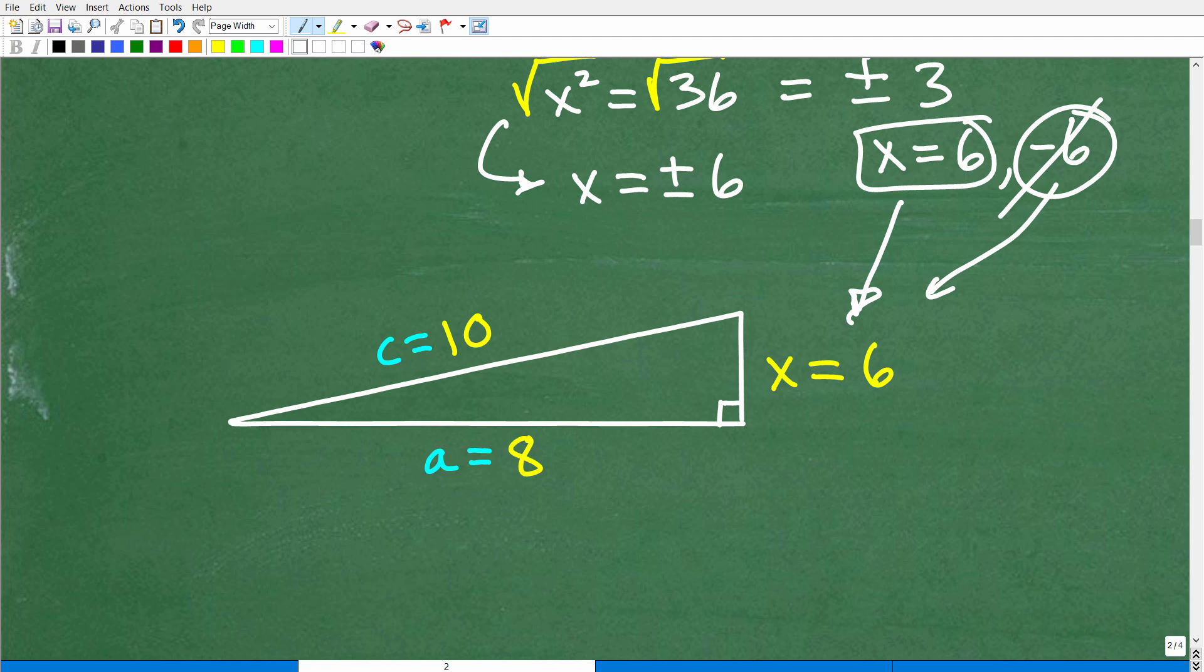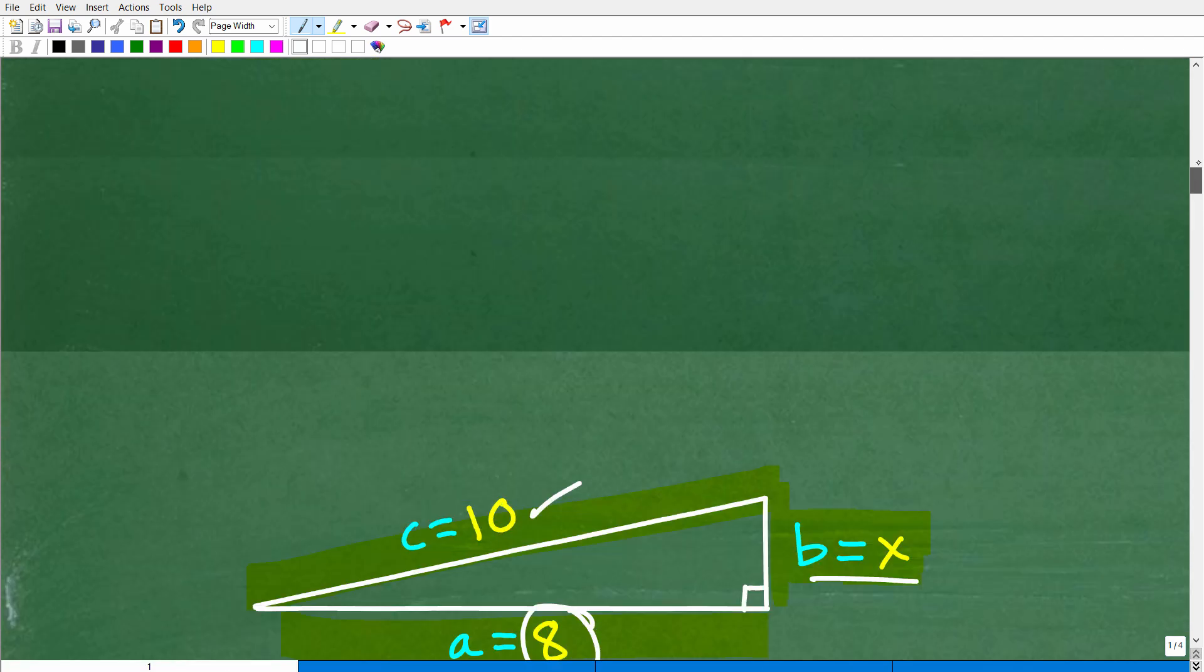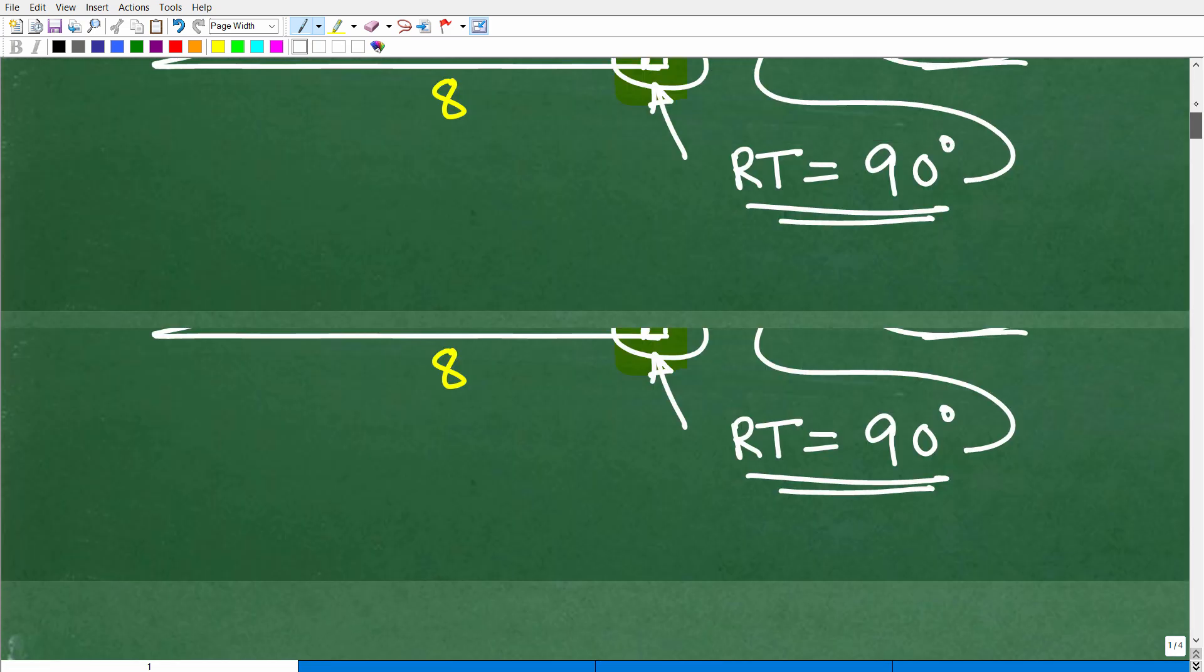The Pythagorean theorem is just one of these formulas that you want to put into your long-term memory. a² + b² = c². I mean, I can't overstate the importance of this formula in mathematics. Not only in geometry and trigonometry and practical applications, it's used everywhere.